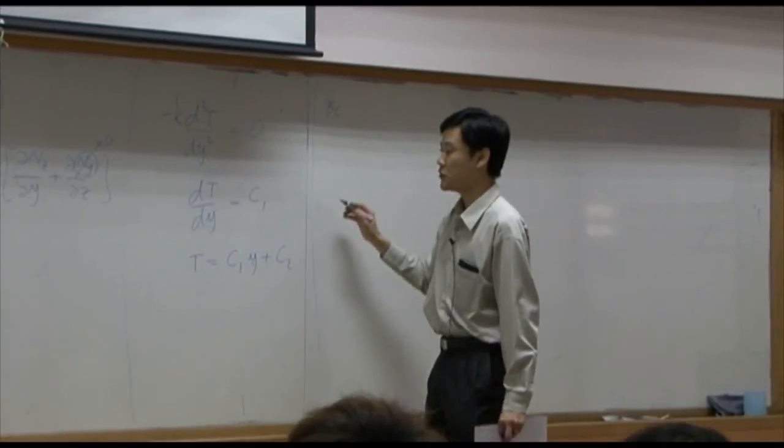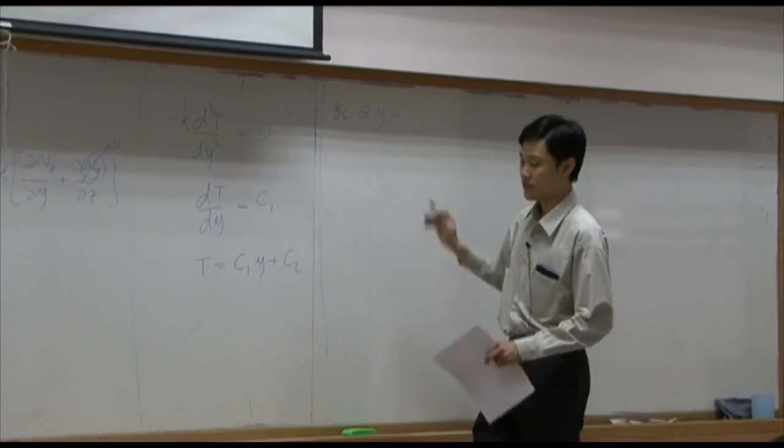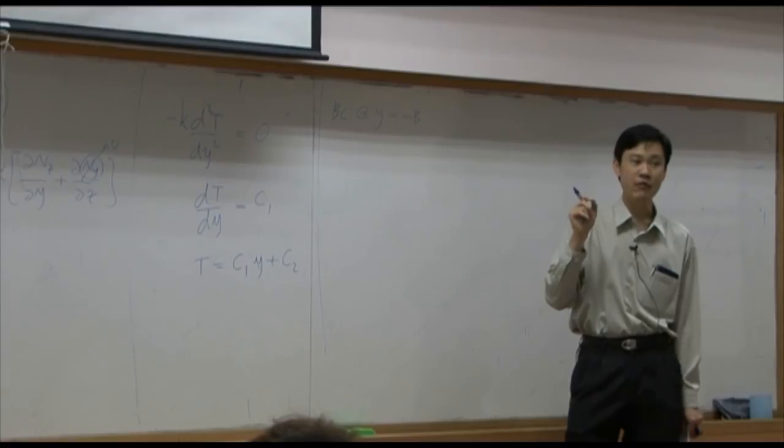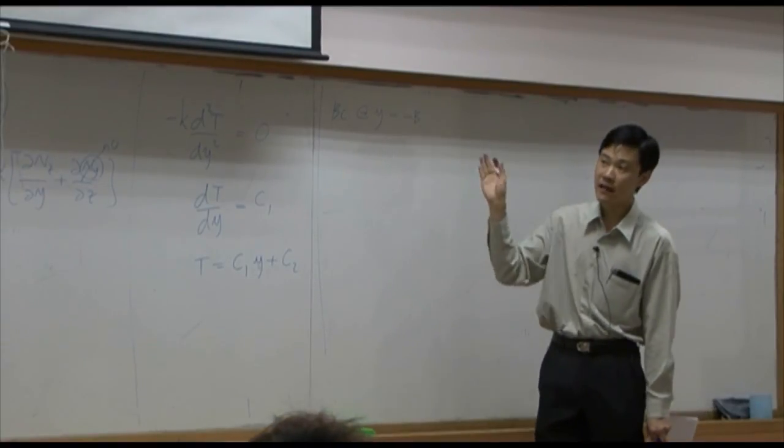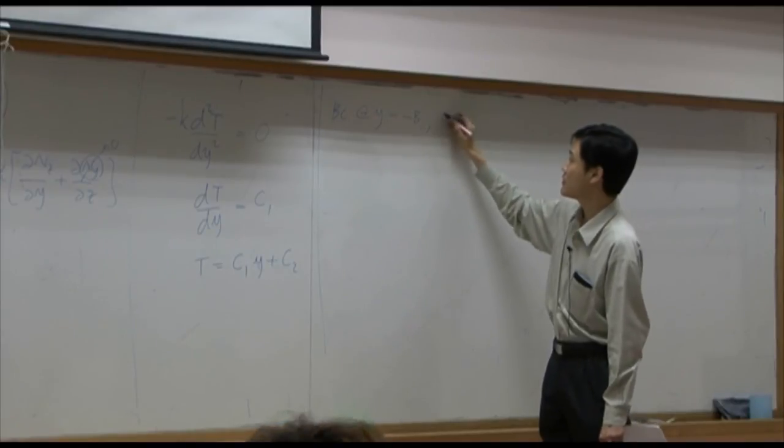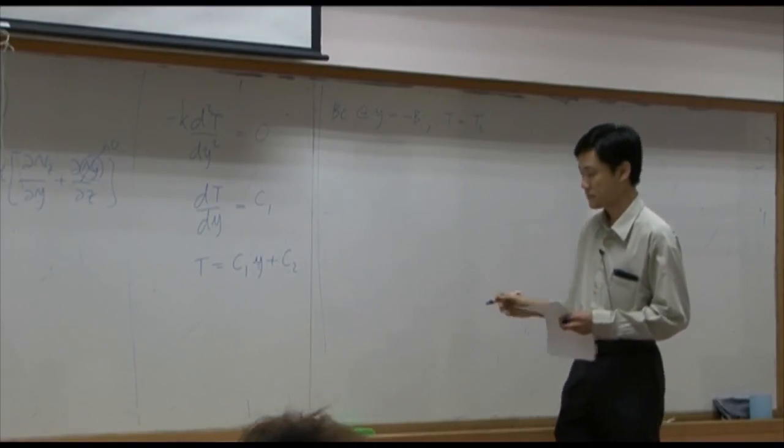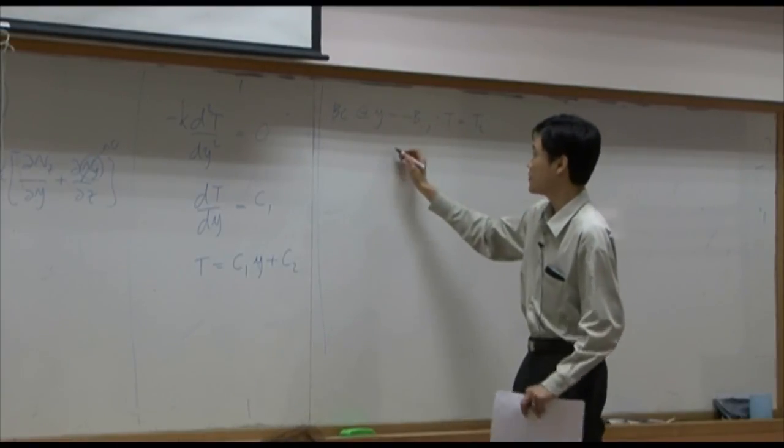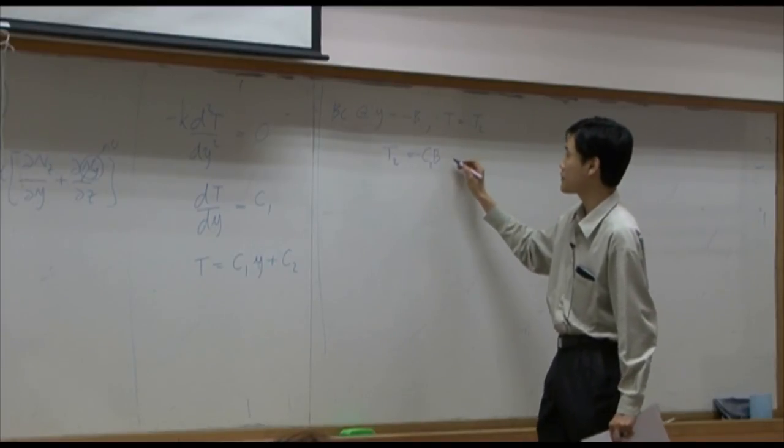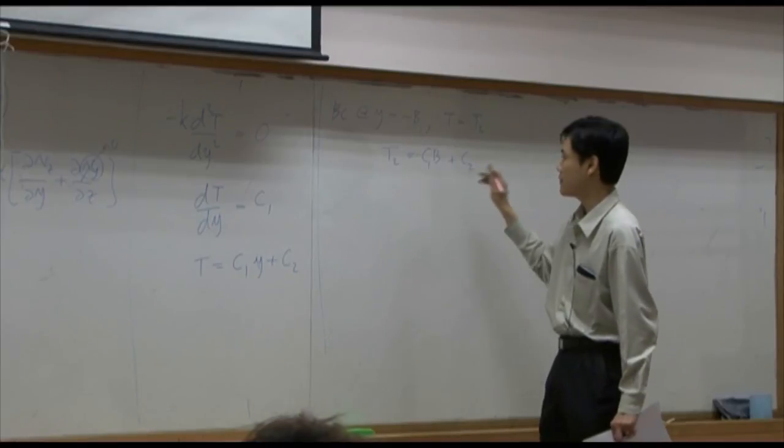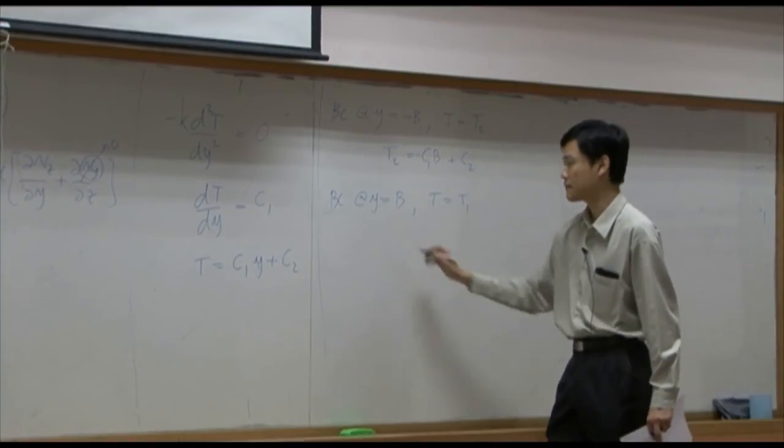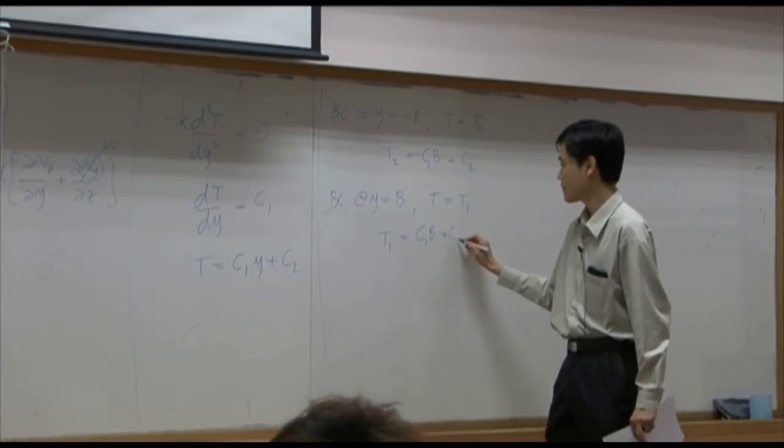So boundary condition that we are going to use would be at y equal to what? Minus b. Because right now, the zero origin point is right in the center. On the left hand side wall, coordinate will be y equal to minus b. Temperature here is equal to t2. So you have t2 equal to c2 minus b plus c, I'm sorry, c1 minus b plus c2. Another boundary, at y equal to b, temperature is t1.